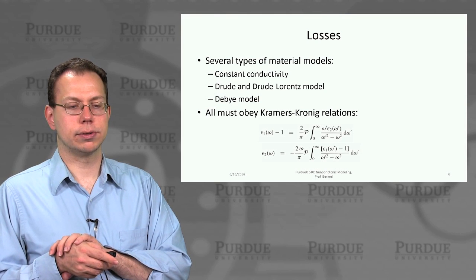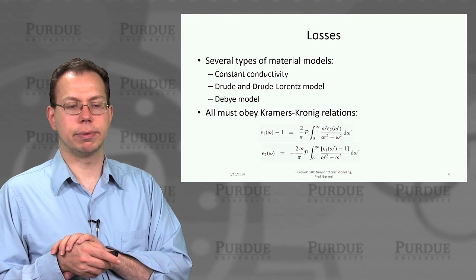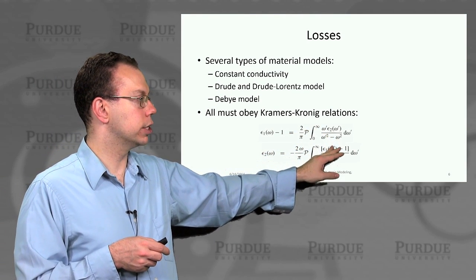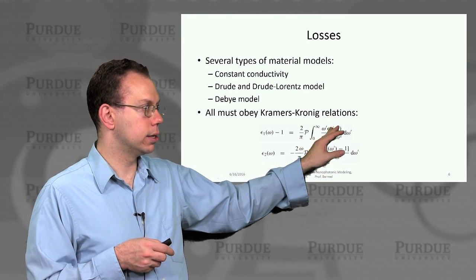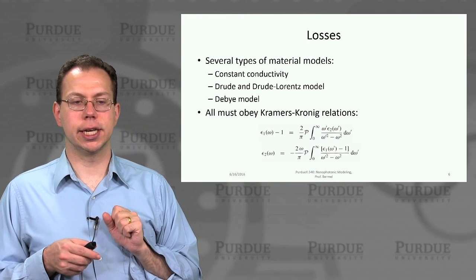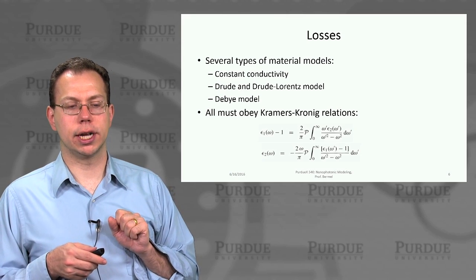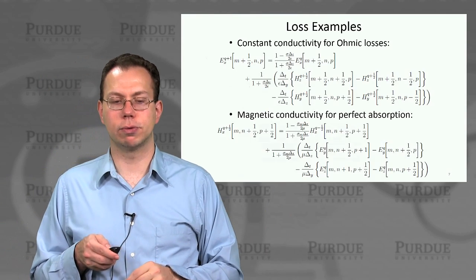Now, all of these models, regardless of the choice, have to satisfy what's called Kramers-Kronig relationship. And it's written down here. I don't expect you to memorize it. But you should be aware that if you're choosing a new loss model, it should be consistent with Kramers-Kronig. All of these already are, so there's no problem.